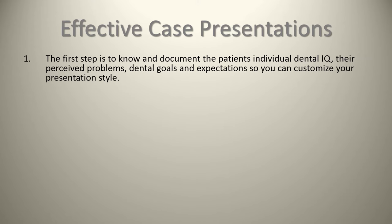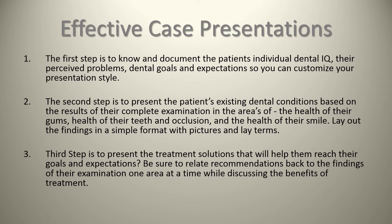The second step is to present the patient's existing dental conditions based on the results of a complete examination — the health of their gums, teeth, occlusion, and smile — and lay out the findings in a simple format. A picture is worth a thousand words, and try to use lay terms. People don't necessarily understand what a Class I malocclusion, bruxism, or chronic generalized severe periodontitis is, so we need to use lay terms so people can understand what we're explaining.